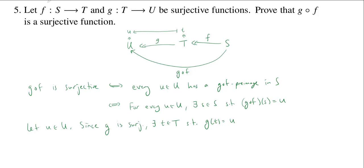Notice here I'm using a there exists and I have an explanation in front of it. OK, so now I have this element t which gets mapped to u and t is in t. But I also know that f is surjective, which means that every element in t has an f preimage. So this little t in t has an f preimage.